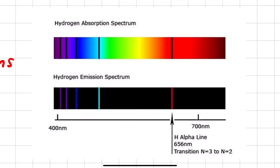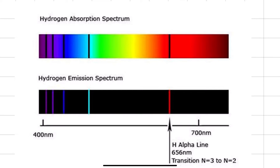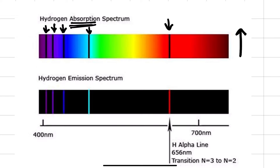On the first spectrum here we can see an absorption spectrum. From what we just learned, when an electron absorbs energy it moves from a lower to a higher energy level. That means there are going to be certain wavelengths of energy that are absorbed by an electron, which are going to cause there to be gaps on the spectrum.